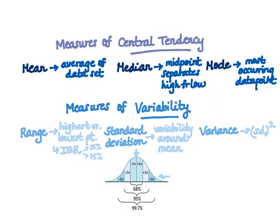With a normal distribution, the mean, median, and mode are all equal. Additionally, the curve follows the empirical rule — the 68%, 95%, 99.7% rule — which states that 68% of data points fall within one standard deviation of the mean, 95% within plus or minus 2, and 99.7% within plus or minus 3 standard deviations of the mean.